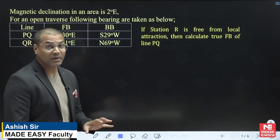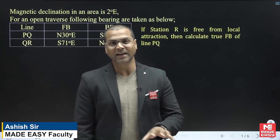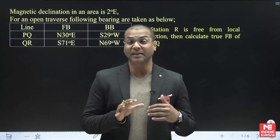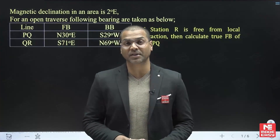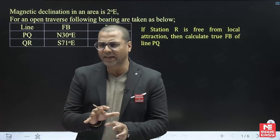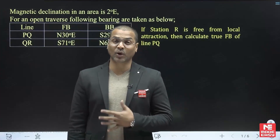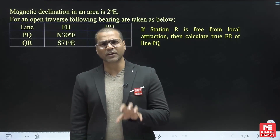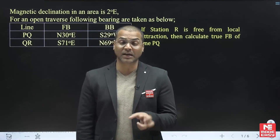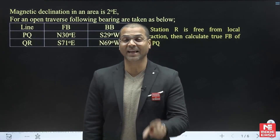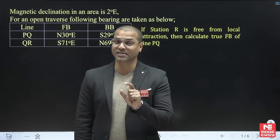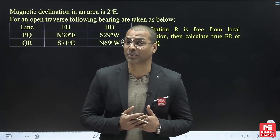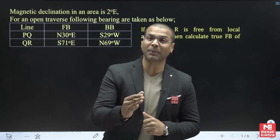This question is basically a combination of local attraction and declination. If you see the past few trends, you will find that in GATE examinations they give questions combining two different concepts together — local attraction as well as declination problems together. Whenever you get such a question, always solve for local attraction first, and once you have the corrected bearing, then apply the declination.